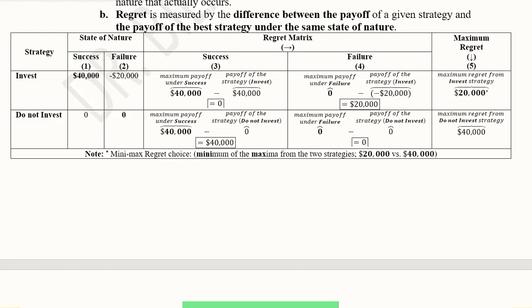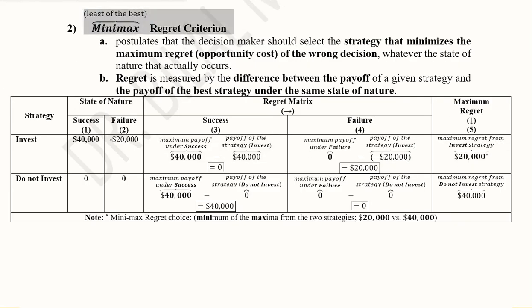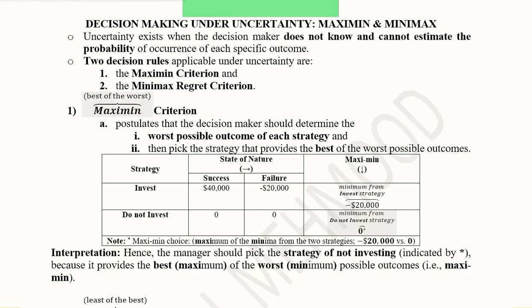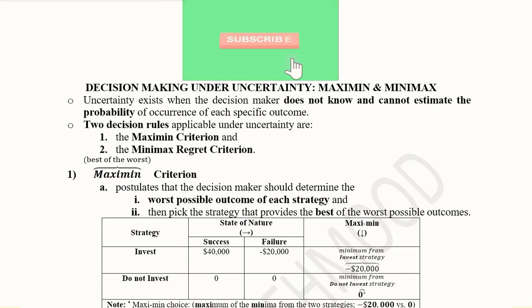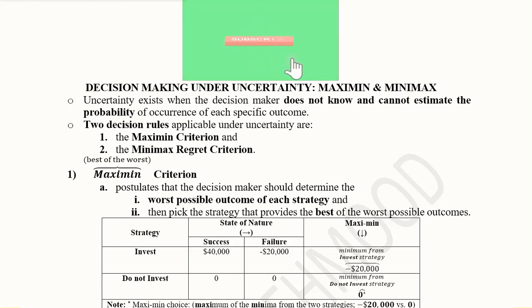These two techniques can both be used effectively. In minimax regret, we chose the two maximum regrets and then the minimum of those two. In maximin, we chose the minimum returns of each strategy and then the maximum of those minima. These two tools allow us to reach a decision without probability values, using the maximin and minimax regret criteria.